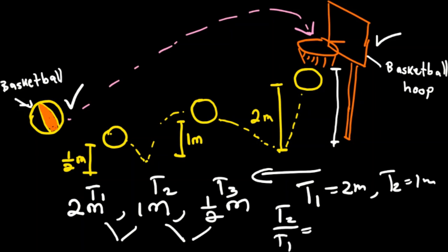Calculating T2 divided by T1 gives us 1 meter divided by 2 meters, which equals 1/2. This tells us the difference in height from T1 to T2 is a half.